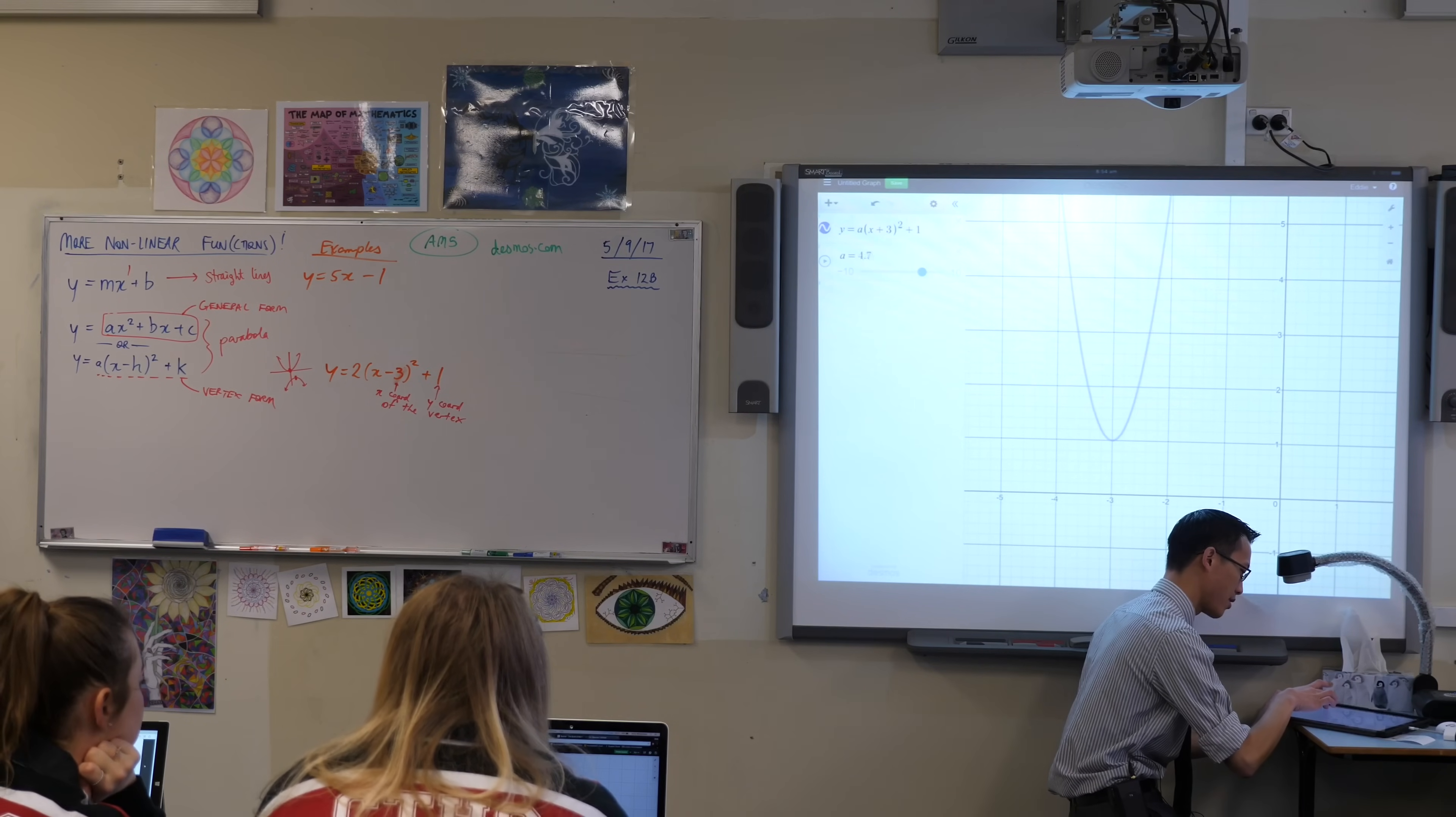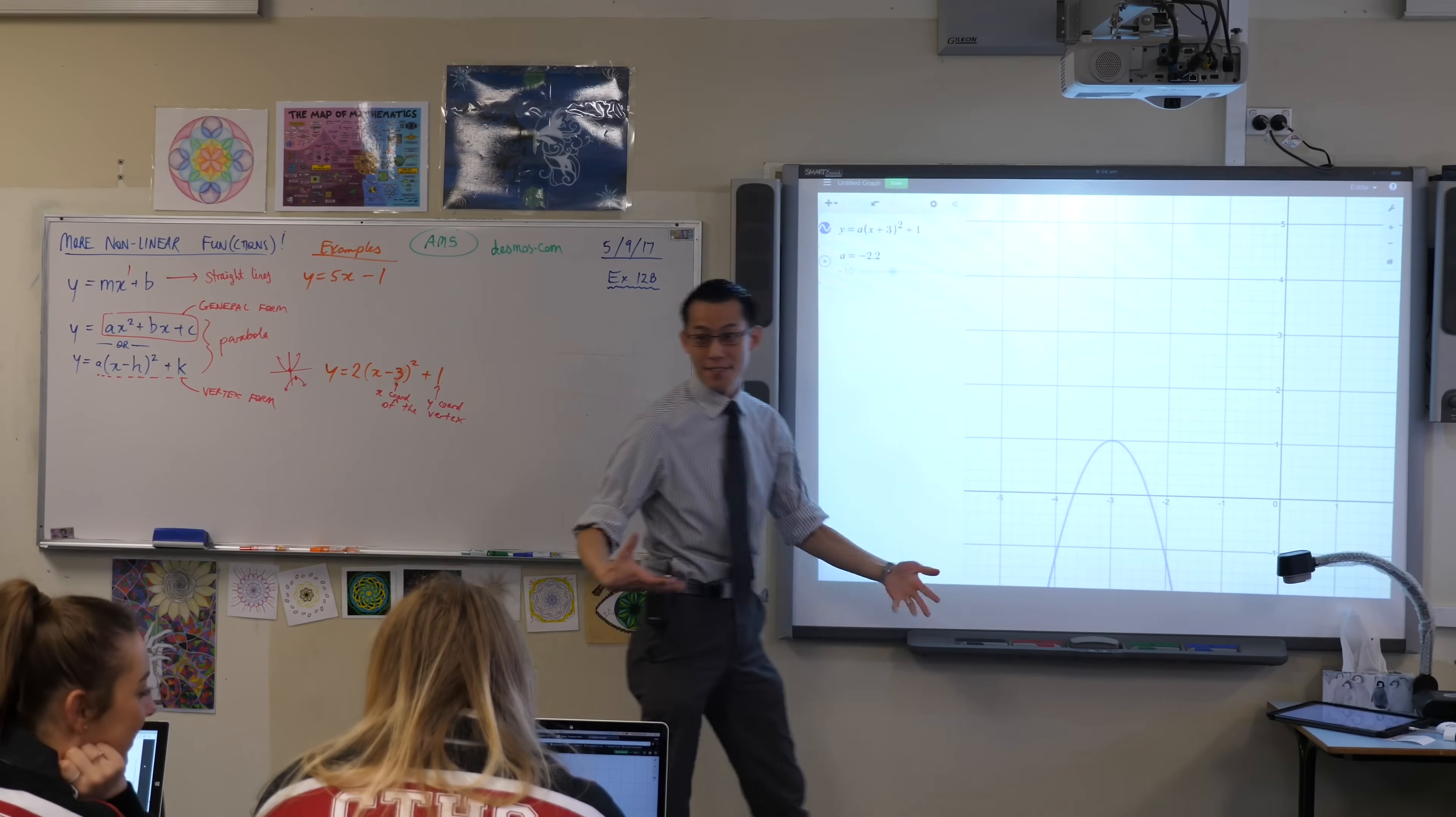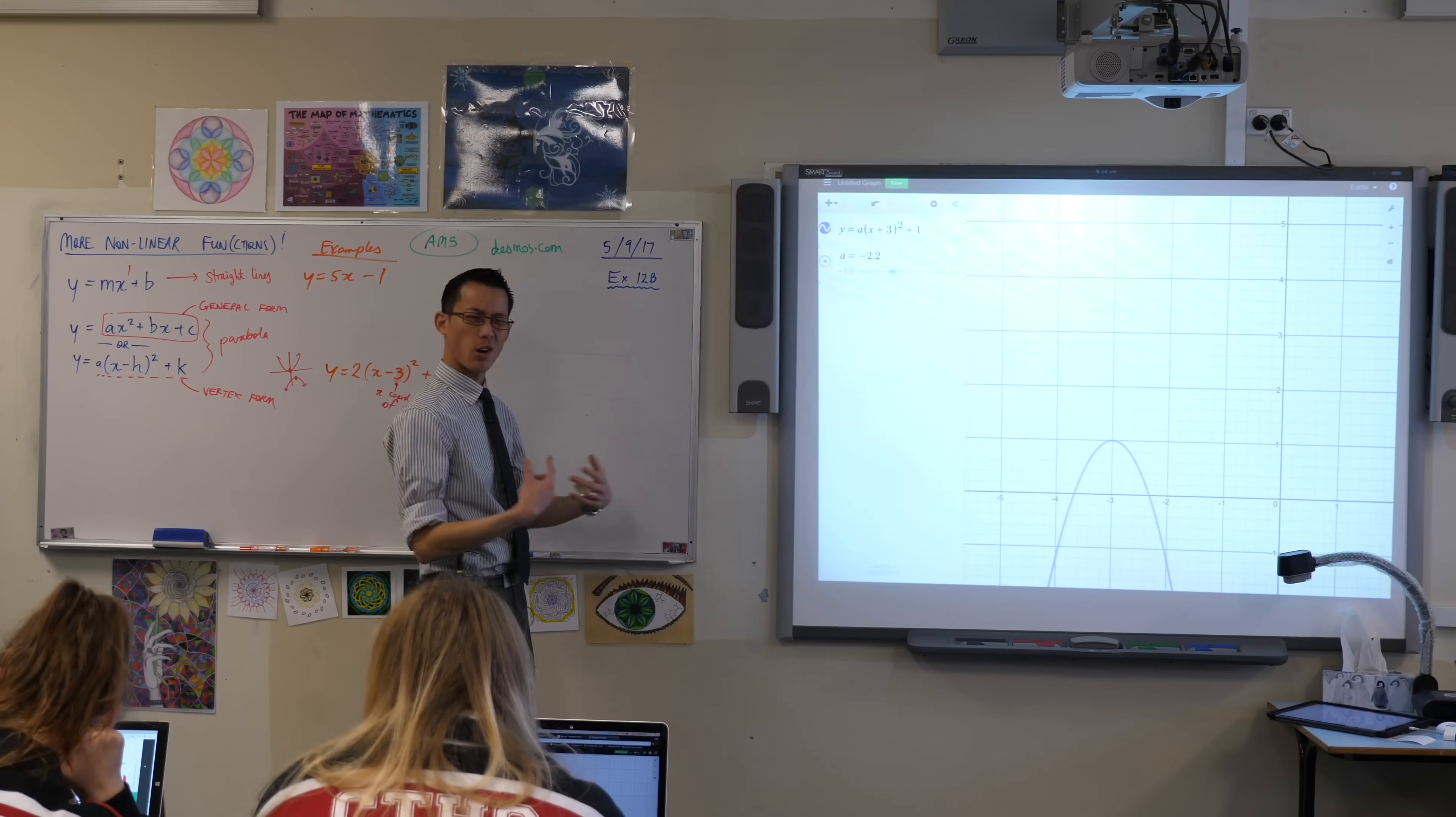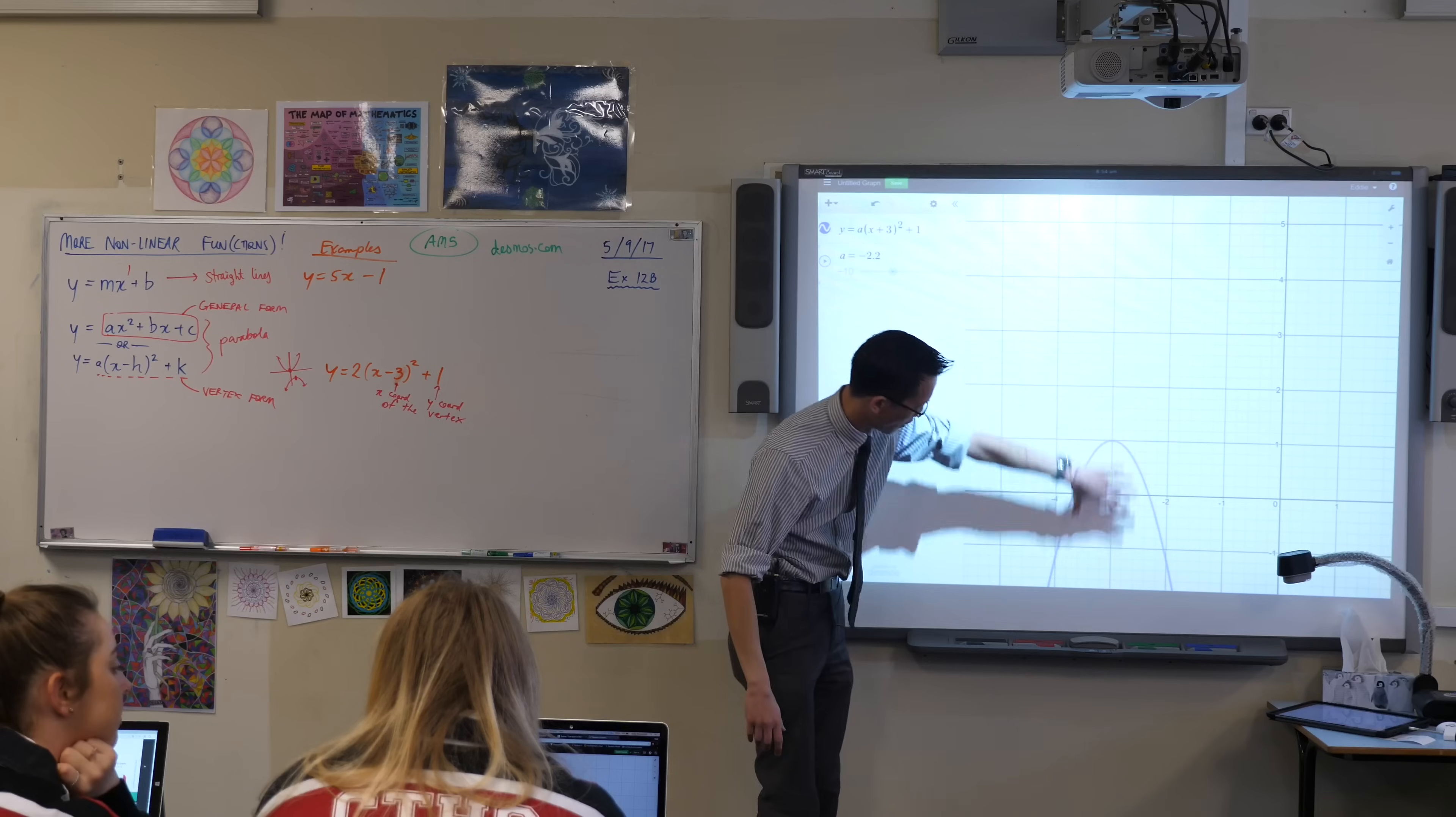So when I have a go, lo and behold, when you have negative values for A, you've got a parabola that's facing down. We call it concave down, because if you think back to science and lenses and stuff like that, it's concave that way.